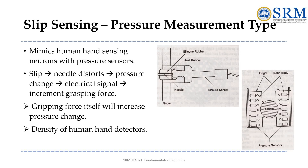The third type is the pressure measurement type. This system imitates the way human hands sense pressure using sensors. When an object slips, a needle is pressed, which changes the pressure and generates an electrical signal. This signal then prompts an increase in the gripping force to secure the object. It is somewhat like how the density of sensors in a human hand helps us feel different pressures.